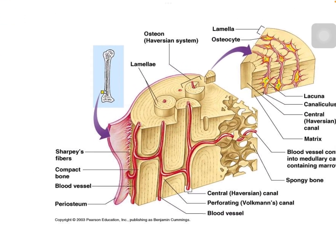The middle or intermediate zone is formed of Haversian systems — these circular structures — which we will discuss in the next few slides. In between the Haversian systems lie regularly arranged bone lamellae called interstitial lamellae.